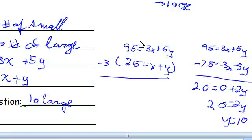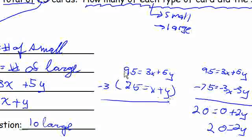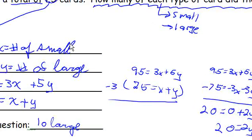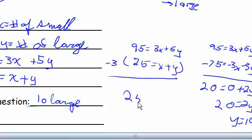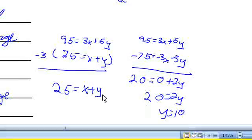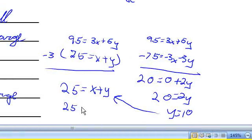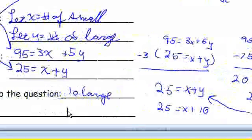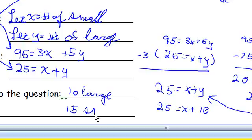So now let's figure out how many small cards by doing a simple substitution. Let's use this one. 25 equals x plus y. We just found out that y equals 10, so let's dump them back into here. 25 equals x plus 10. 10 plus what is 25? 15 small cards. So there you have it.